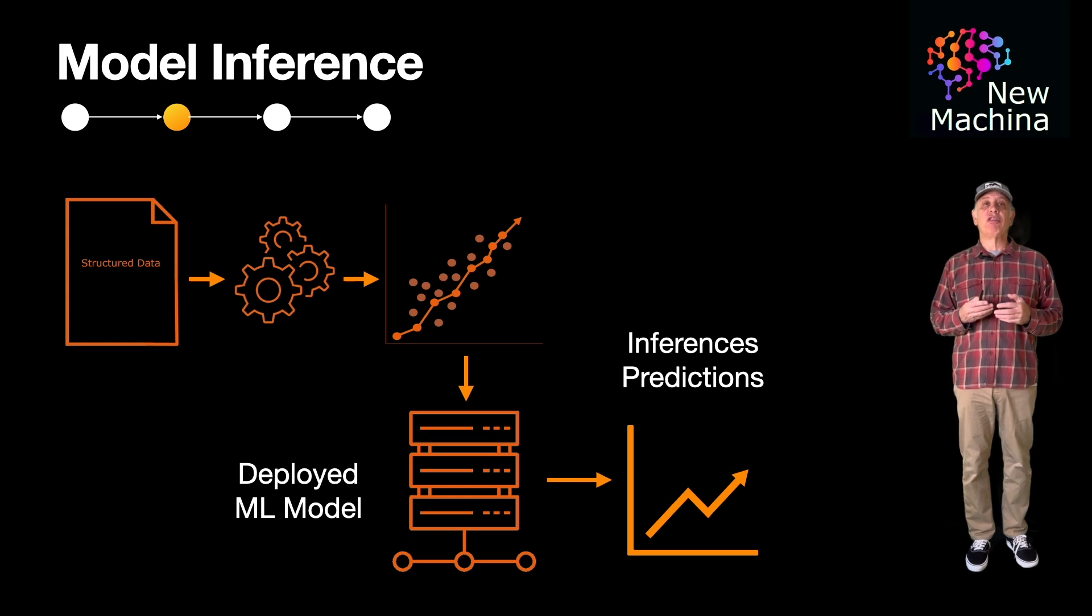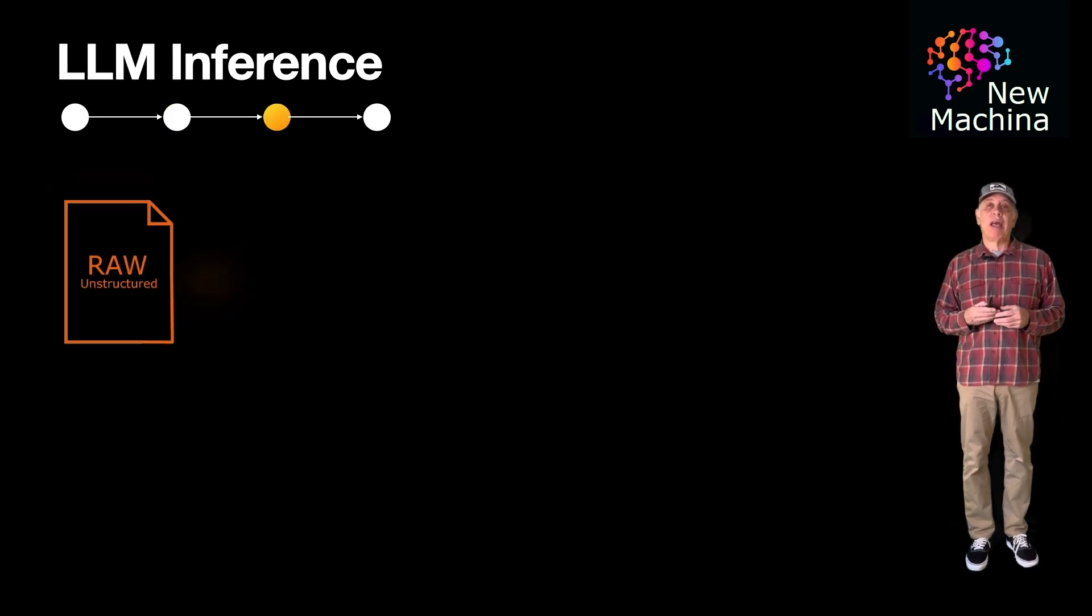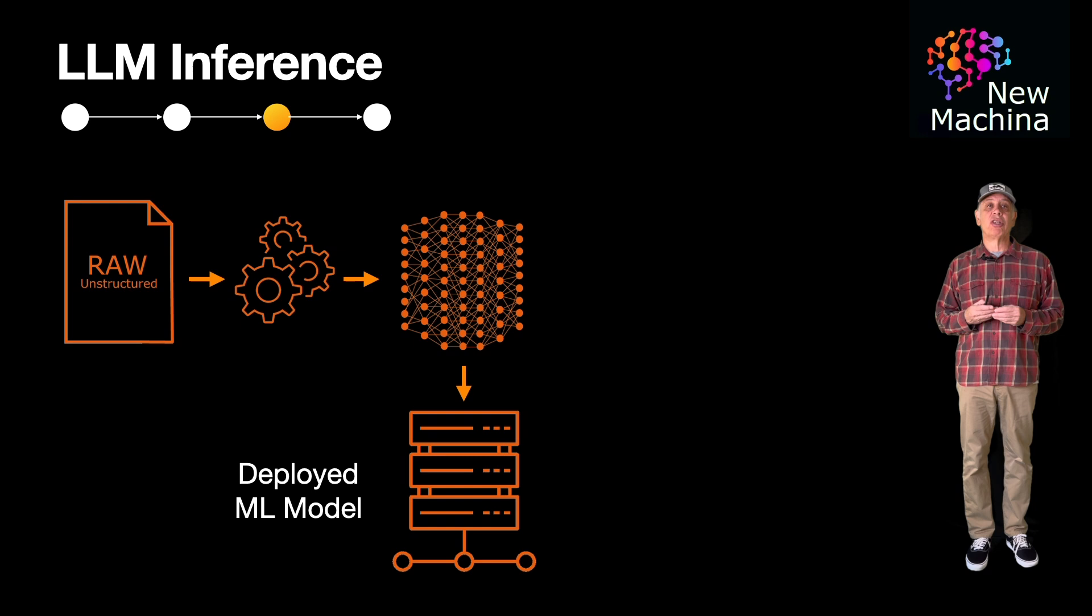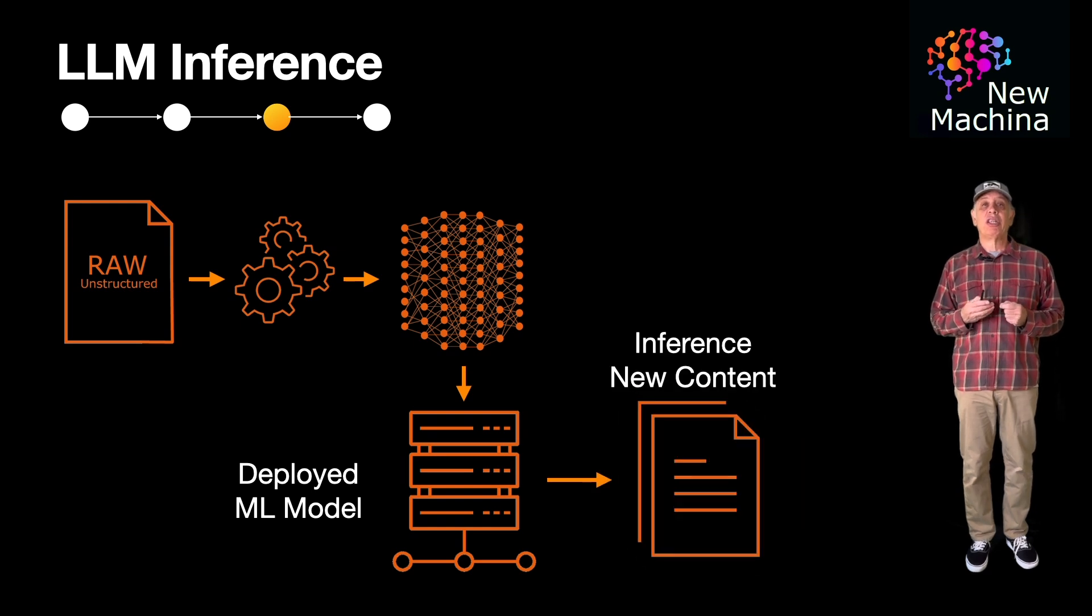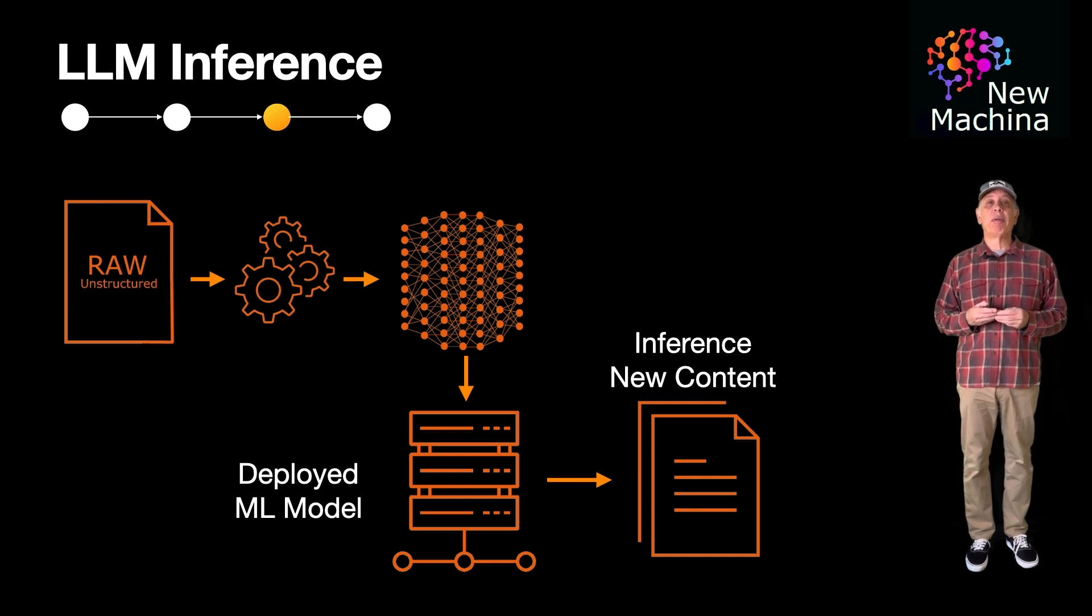In the case of generative AI, an LLM uses patterns and knowledge it learned during training to generate new synthetic content. For instance, an LLM can generate text, answer questions, translate languages, or summarize documents based on input data.